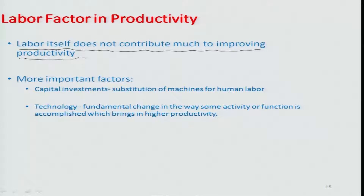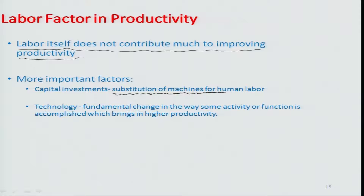The question then becomes: what do you do if you cannot improve labor productivity beyond a fixed value? One important factor to address is substituting some human effort with machine effort. If you substitute machines for human labor, there is a socialistic concern about unemployment and job generation, but you have to look at it from the standpoint of overall profitability or productivity of the system when making such investment decisions.